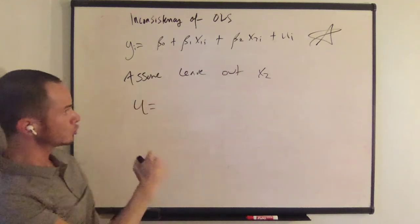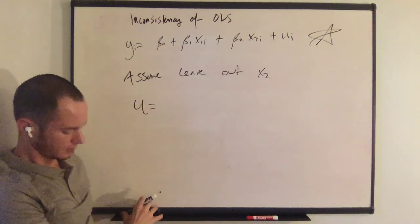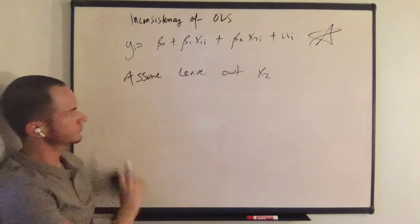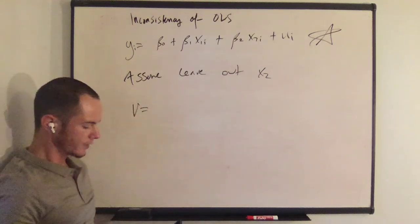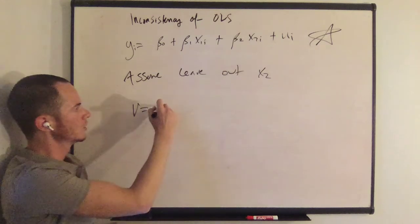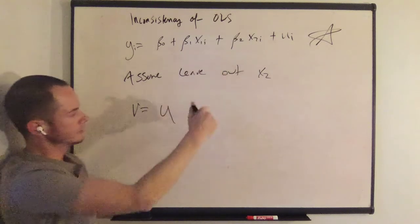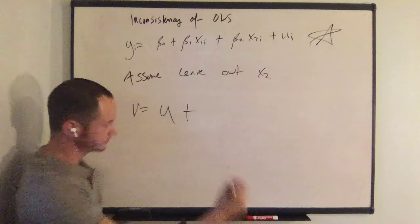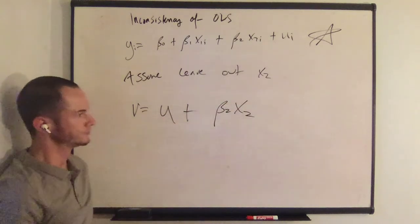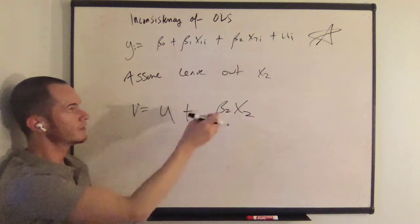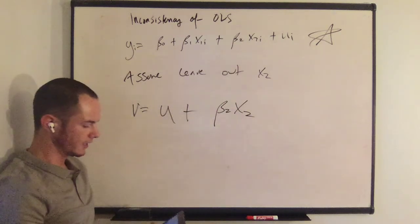Well, the error u—well, let's say the error v, we have a u up there—the error v is going to be given by u, that error, plus beta 2 x2. Right? Because now the beta 2 x2 is in the error.